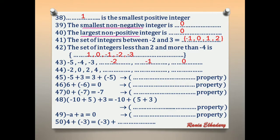Number 44: we have negative 2, 0, 2, 4. We add 2 each time. So the next numbers are 6, 8, 10.